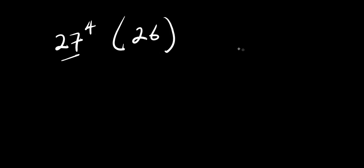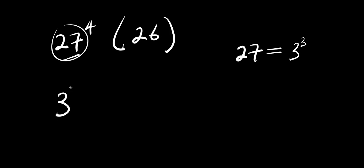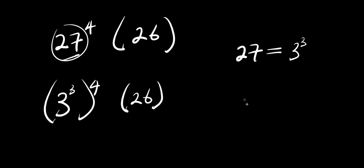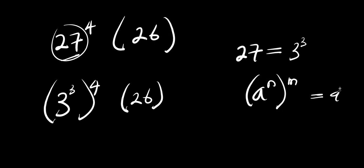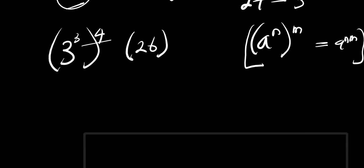Now 27 is simply 3 to the power of 3, so I can easily replace 27 with 3 power 3. I have 3 power 3 raised to the power of 4, times 26. Now if you have a power n raised to the power of n, this equals a power n times n. Applying this identity, we multiply the exponents, so we are simply going to have 3 power 12 times 26.